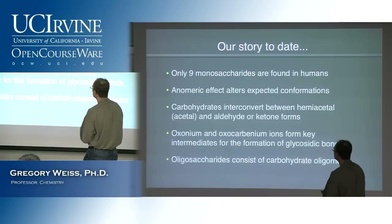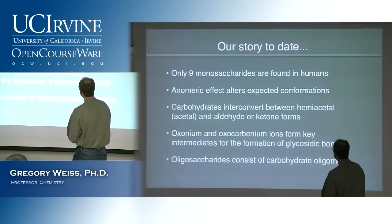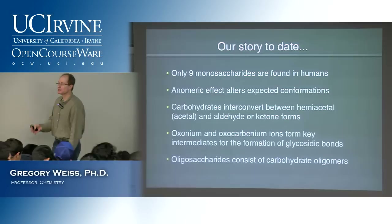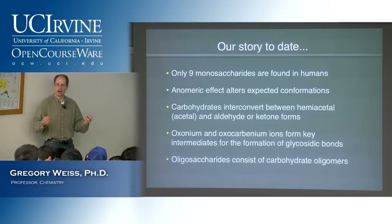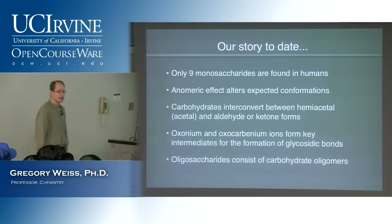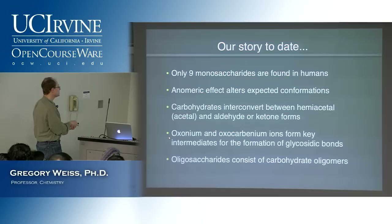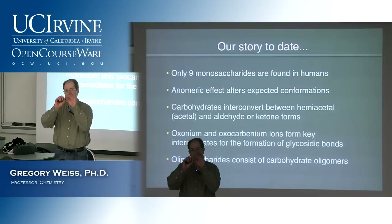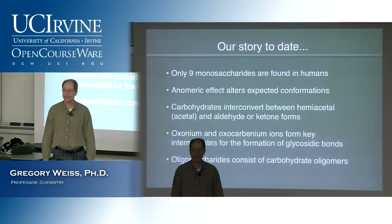We talked briefly about the anomeric effect—I don't think that's such a big deal, so I won't dwell on it. More importantly, carbohydrates interconvert between a hemiacetal form and an aldehyde or ketone form, and that aldehyde or ketone form is reactive. That's the form with an electrophile that can start reacting with surface proteins in your cells and eventually cause advanced glycosylation end products—which we'll talk about today. We also talked about oxonium and oxocarbenium ions, the key ionic intermediates observed when you form or break glycosidic bonds. At the very end, we talked about oligosaccharides—things like starch, which are long strings of carbohydrates strung together by glycosidic bonds.